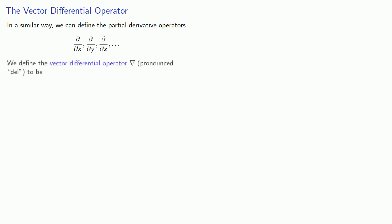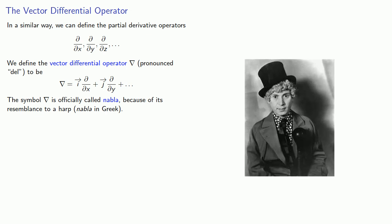And we define the vector differential operator, this inverted delta, pronounced del. Now this symbol, which we usually read as del, is officially called nabla because of its resemblance to a harp.